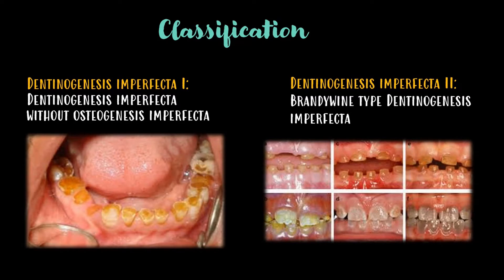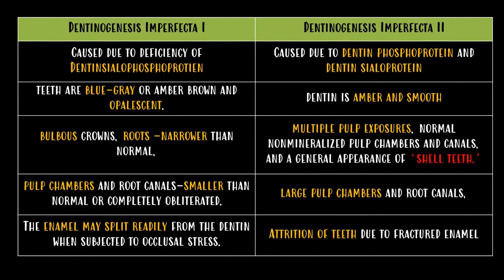Coming to the clinical features of each type: Dentinogenesis imperfecta Type 1 is caused due to deficiency of dentin sialophosphoprotein. Teeth are blue-gray or amber-brown in colour and are opalescent. Bulbous crowns are seen and roots are narrower than normal. Pulp chambers and root canals are smaller than normal or completely obliterated. The enamel may split readily from dentin when subjected to occlusal stress.